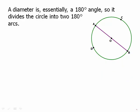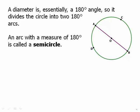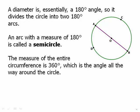A diameter is essentially a 180-degree angle. As we go from A to O to B, it's a straight line, so that's 180 degrees on each side, dividing the circle into two 180-degree arcs. An arc with a measure of 180 degrees we call a semicircle. The measure of the entire circle, all the way around the circumference, is 360 degrees. If you're standing one way and turn all the way around so you're facing the same way again, that's what it is to turn 360 degrees.